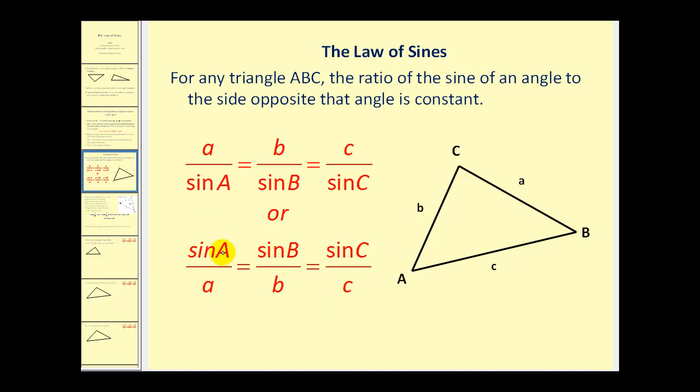The sine of angle A divided by the length of side A must equal the sine of angle B divided by the length of side B, which must equal the sine of angle C divided by the length of side C. So what this is saying is that these ratios will be constant in any triangle.